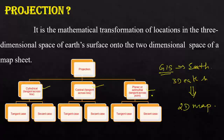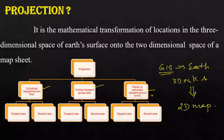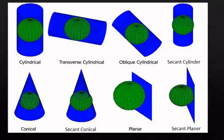Cylindrical projection can be tangent case or secant case. Conical projection can also be tangent case or secant case, and planar projection can also be tangent case or secant case. So all three — cylindrical, conical, and planar projection — are classified into two types: tangent case and secant case.